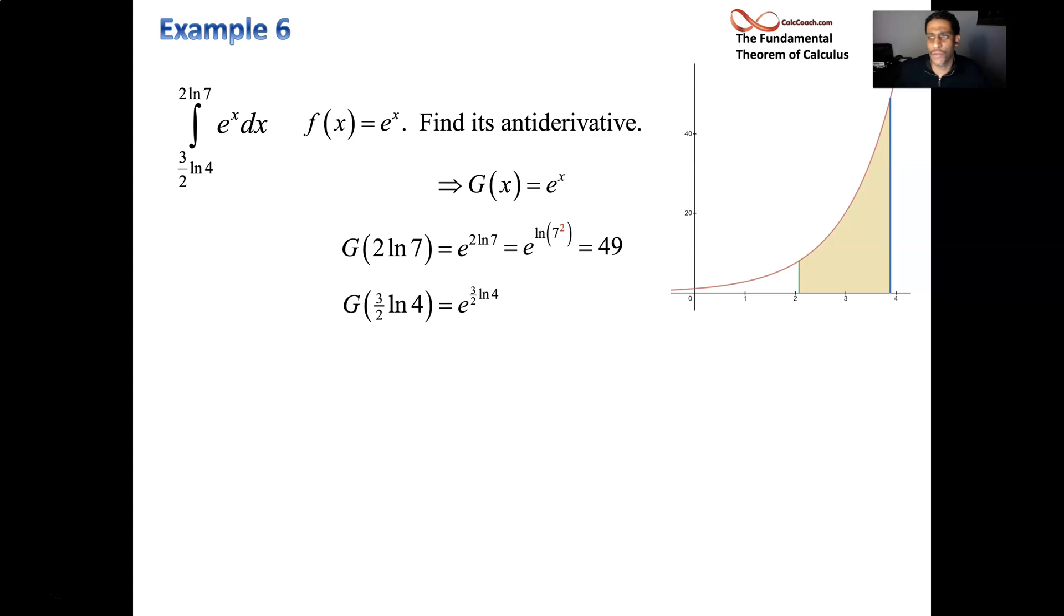Same thing for the other: e to the 3 halves log 4. Bring the 3 halves up as the exponent on 4, and then we can cancel. It's just 4 to the 3 halves. Remember that is the square root of 4, which is then cubed: 2 cubed, which is 8. The answer to this question is 49 take away 8. That area is exactly equal to 41. Okay, so after finding the antiderivative, now it becomes a trouble point of just being able to evaluate the algebra once we use more and more different functions.